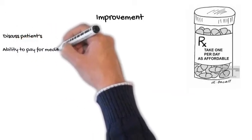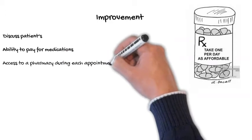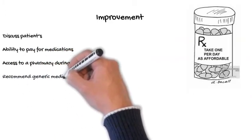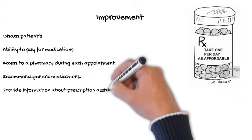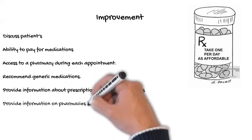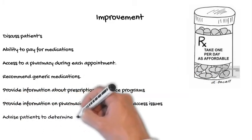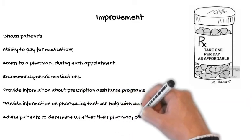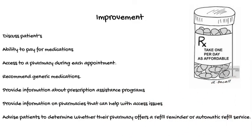To help improve our patient's general adherence and compliance, let's discuss their ability to pay for medications and their access to pharmacy with each appointment. We can recommend generic medications as an alternative when they speak with their doctor. We can provide information about prescription assistance programs and discuss ways that pharmacies can help with access issues, delivery services, refill reminders, or automatic refill services.